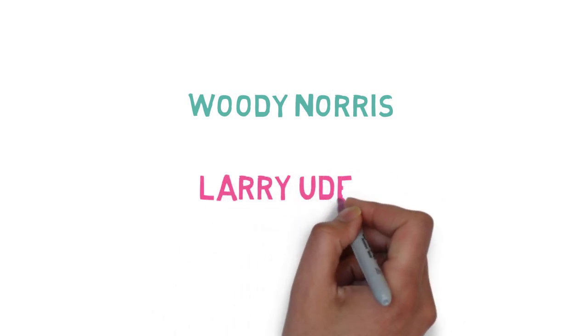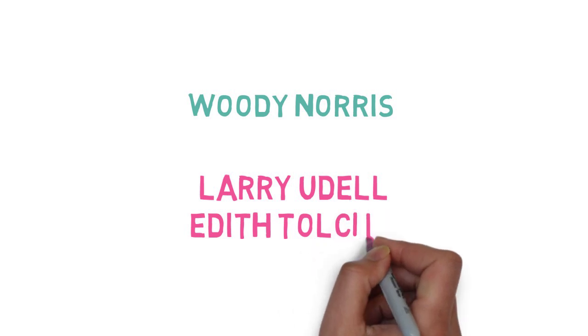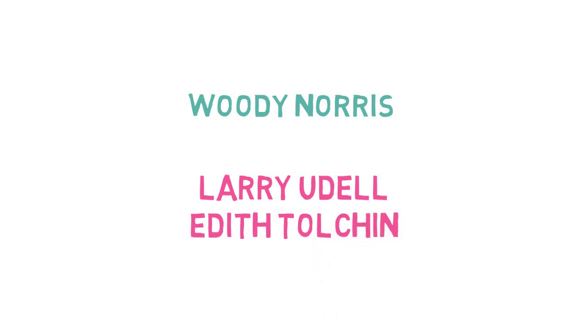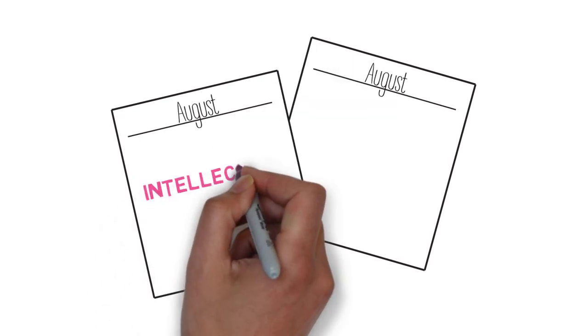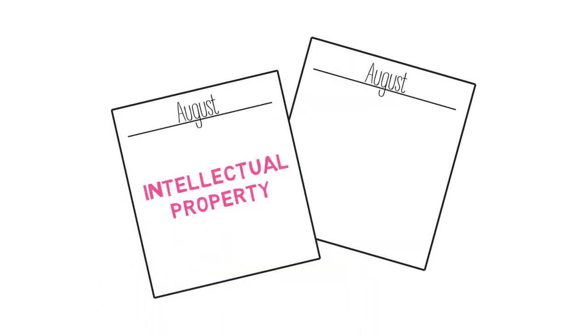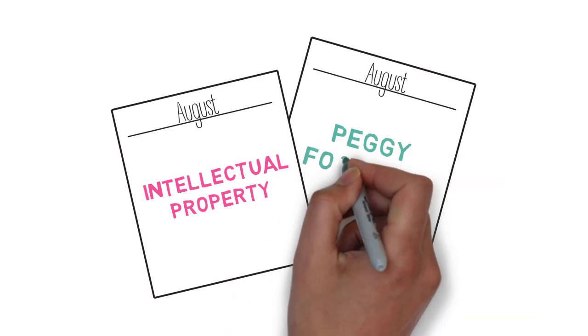Larry Udell and Edith Tolchin, who will give presentations on their experience with intellectual property. This two-day event will cover a wide variety of topics related to IP, and Commissioner for Patents Peggy Focarino will be on hand to talk